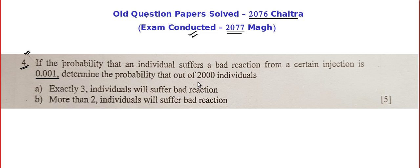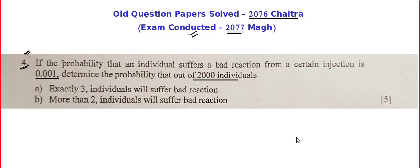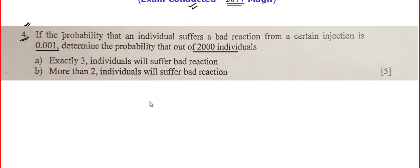Now they took a sample of 2000 people. Clearly the reaction — let it be bad reaction, let it be good reaction — it can be counted integer-wise. We won't have one and a half person suffering or 5.35 people suffering. So clearly the distribution is discrete. And I can see that this is a binomial distribution because I can see the Bernoulli trial.